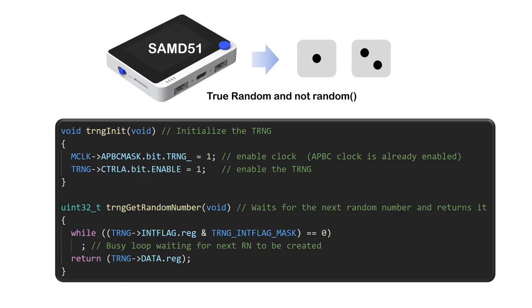Implementing it in Arduino is actually very simple. During setup, you just initially enable the true random number generator. Then whenever you require a new random number, just call the function where it looks for the random number generated from the driver and returns it. All I'm doing is calling this function any time I require a random number instead of using the standard random number generator.